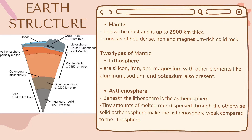Next is the mantle. It is below the crust and is up to 2,900 kilometers thick, and consists of hot, dense, iron, and magnesium-rich solid rock. It is more ultra-mafic in composition, meaning it has even more iron and magnesium than mafic rocks and even less silica. Although the mantle has a similar chemical composition throughout, it has layers with different mineral composition and different physical properties.